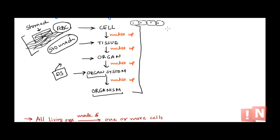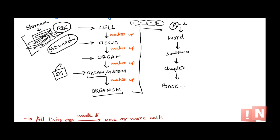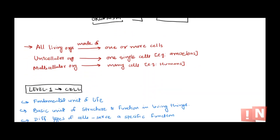The analogy to understand this: imagine all the letters A to Z. A single letter represents one single cell. When you put letters together, you get a word. Put all the words together and you form a sentence. Put all the sentences together and you form a chapter. Combine all the chapters together and you form a book. Similarly, the fundamental unit of an organism is a cell. Put cells together to form tissue, different tissues together to form an organ, different organs to form an organ system, and combine all systems to form an organism.